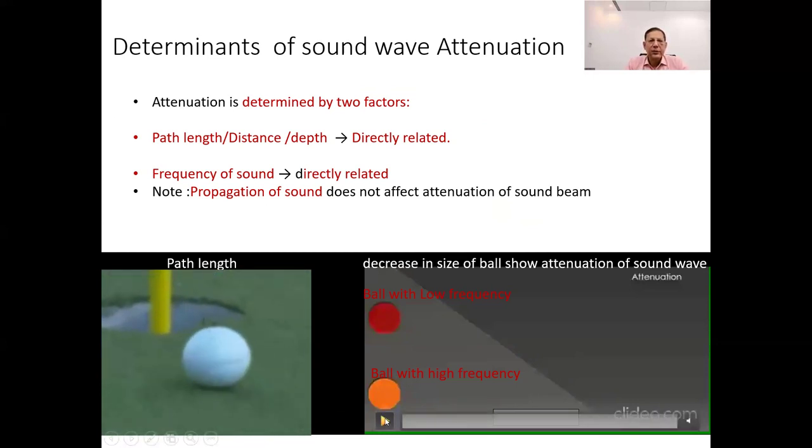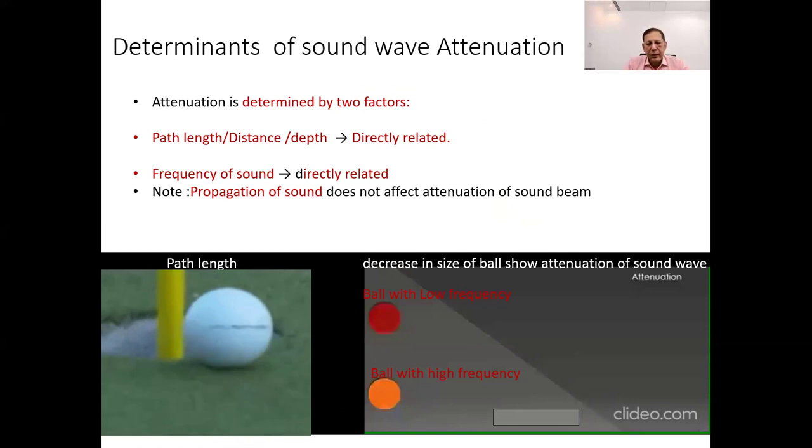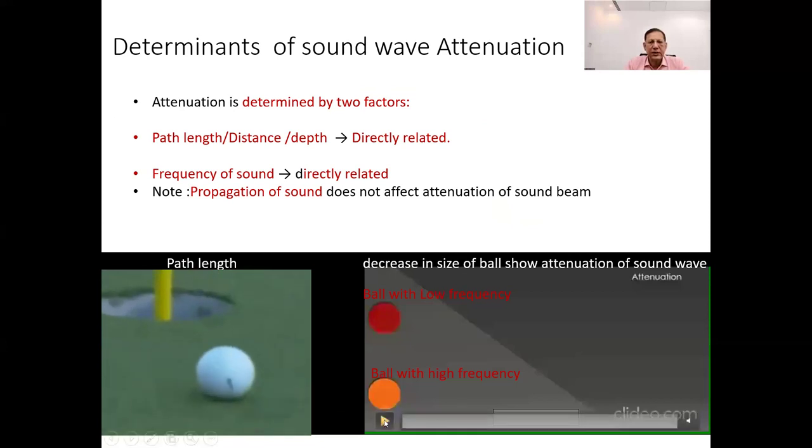It's like how your voice gets quieter the farther you are from someone you're talking to. In ultrasound imaging, the depth of the tissue being examined determines the path length. Deeper tissues require sound waves to travel farther, resulting in more attenuation and potentially affecting the quality of the ultrasound image.